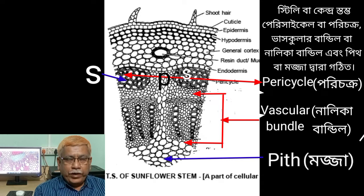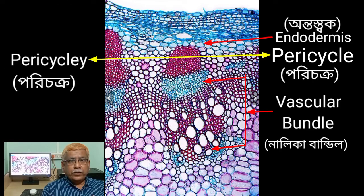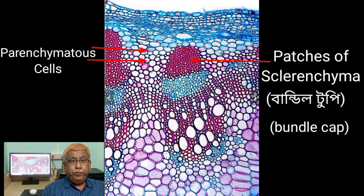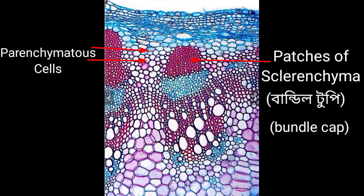The central portion of the tissue of the stem surrounded by endodermis is called stele. It consists of pericycle, vascular bundle, and pith. Pericycle occurs between the vascular bundle and endodermis. It is multilayered parenchymatous with alternating patches of sclerenchyma. These patches are called bundle caps.